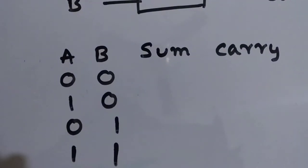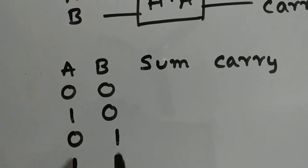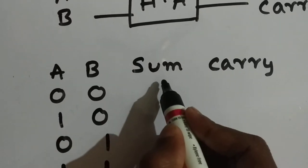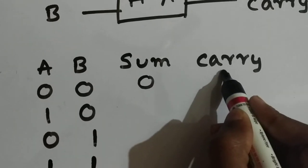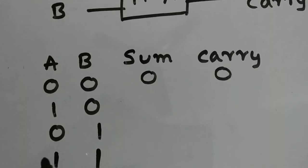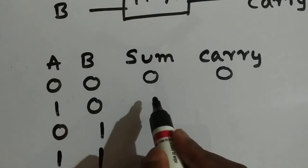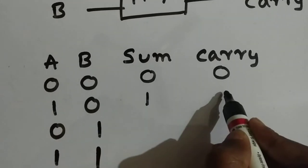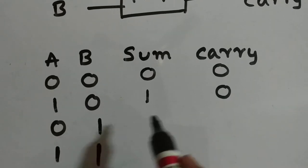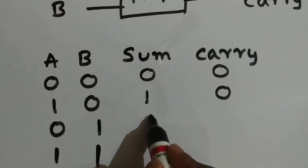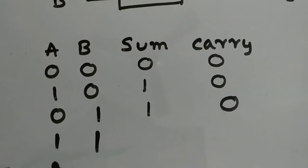Now we will add them and check what will be the sum and carry. 0 plus 0 is 0, so sum is 0 and carry is 0. For 1 and 0: sum is 1 and carry is 0. For 0 and 1: sum is 1 and carry is 0.